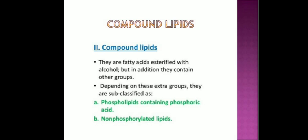Compound lipids or complex lipids are the esters of fatty acids with alcohols containing additional groups. They are fatty acids esterified with alcohols and in addition they contain other groups like phosphate, nitrogen bases, carbohydrates, proteins, etc. Depending on these extra groups, the compound lipids can be further divided into various subclasses like phospholipids containing phosphoric acids, non-phosphorylated lipids, glycolipids, lipoproteins and other complex lipids, which we will study one by one in detail.